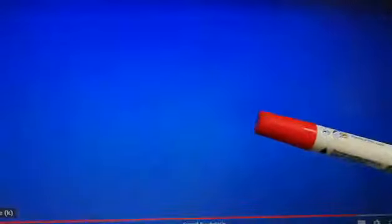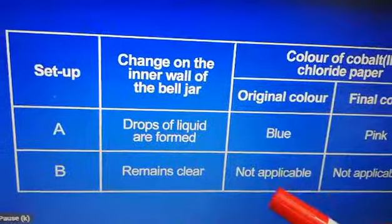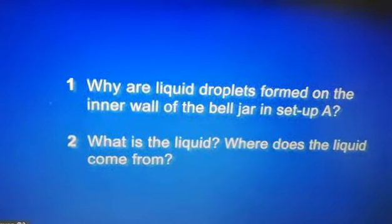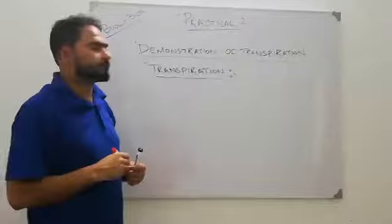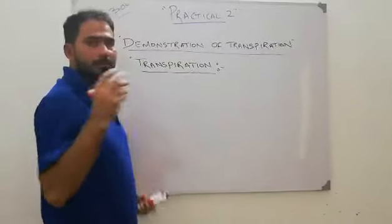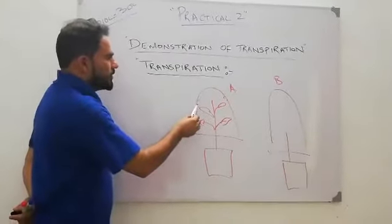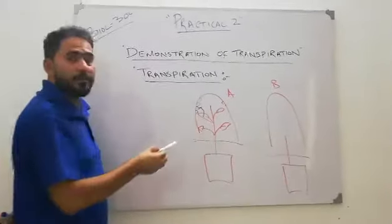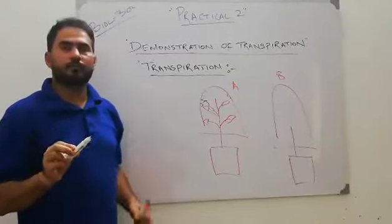Now we will use tri-cobalt chloride here. Where liquid forms, its color will change. So where does this liquid come from inside the jar? These liquid products were generated as a result of the process of transpiration.